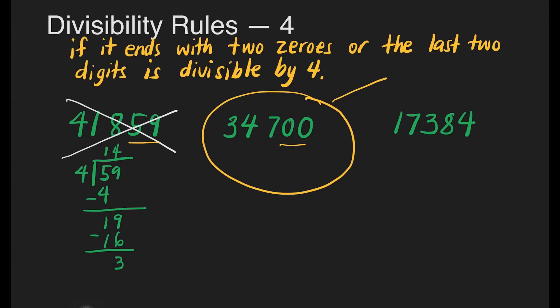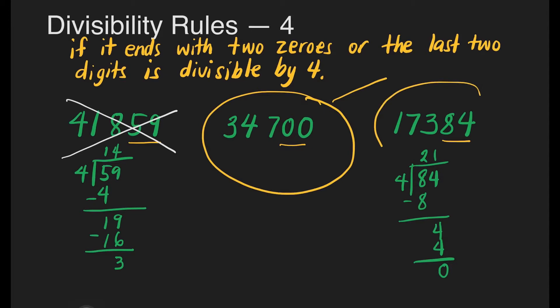Let's go to the third number. Let's check if the last 2 digits is divisible by 4. This number is 17,384 and the last 2 digits are 84. Let's divide: 84 divided by 4. How many 4s are there in 8? That's 2. 2 times 4 is 8. Subtract, then bring down 4. How many 4s in 4? 1. 4 times 1 is 4. Subtract — we have no remainder. It means 17,384 is divisible by 4.